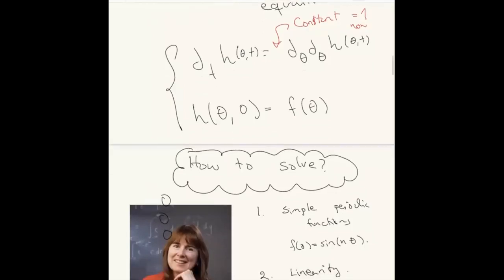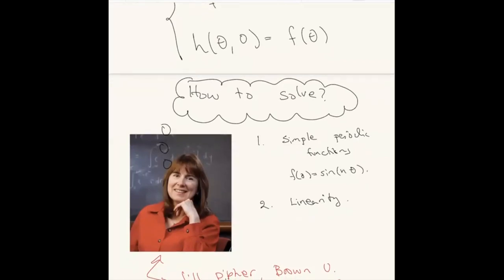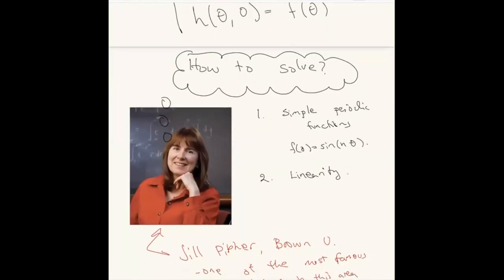You have an equation - how do you solve it? There's an important issue about uniqueness I'll gloss over. Fortunately there is only one solution and solutions exist for any boundary data f with extremely minor assumptions. This is related to a big area of harmonic analysis - several courses are dedicated to this. Here's a picture of Jill Peifer, a very famous mathematician at Brown University who's done a lot of work in Fourier series. I had the privilege of meeting her once, phenomenal person.